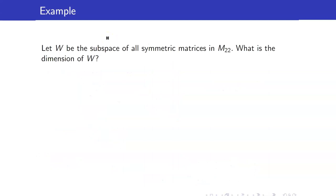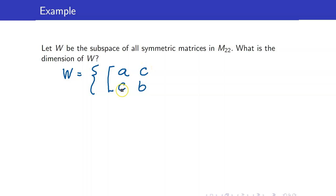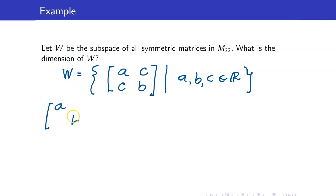Let us consider another example. W is a subspace of all symmetric matrices in M₂₂. What is the dimension of this subspace? Let us first write the elements of W. Since they are symmetric matrices, we can have entries a, b, c where the (1,2) and (2,1) entries must both equal c. Then a, b, c are just real numbers. An arbitrary element would be a 2×2 matrix where the off-diagonal entries are equal.